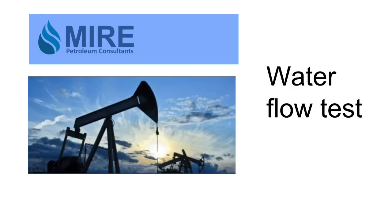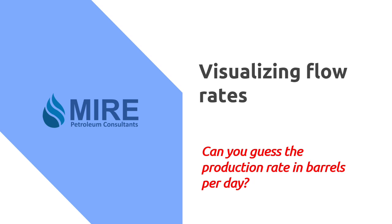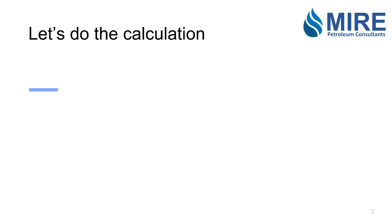Today we did the flow test and the purpose of the test was to help us visualize flow rates. So can you guess the production rate in barrels per day? Okay, so let's do the calculation. What do we know? We know that we had five gallons of water in 35 seconds.